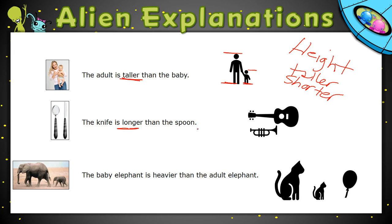Here we're talking about the word longer. When we compare something called length, we talk about how long an object is. If one is the bigger one, that's the longer one. So in this case, the guitar is longer than this horn, and the horn is shorter than the guitar.